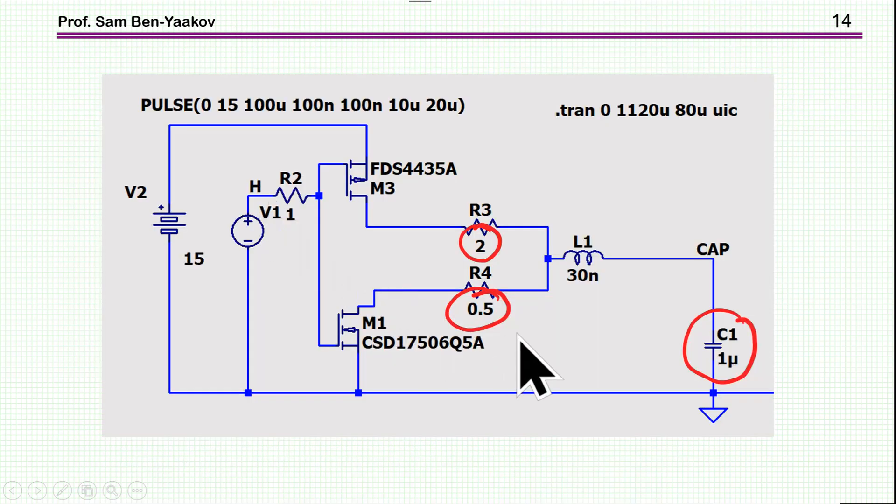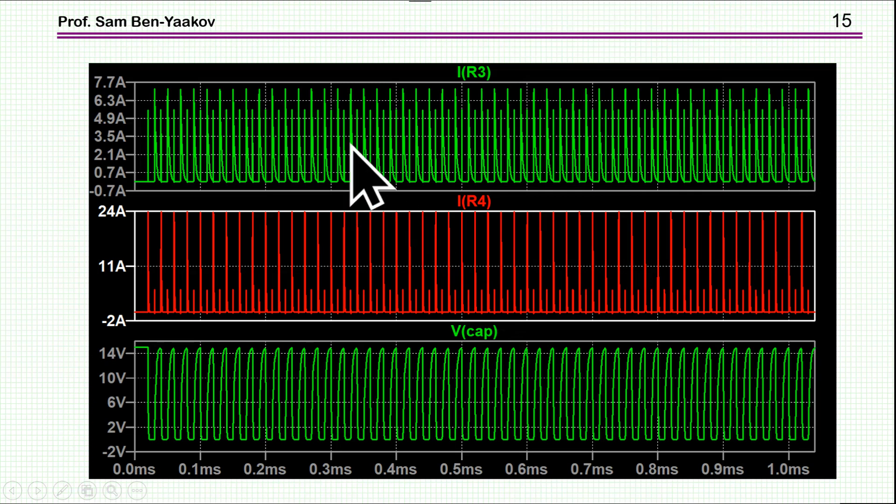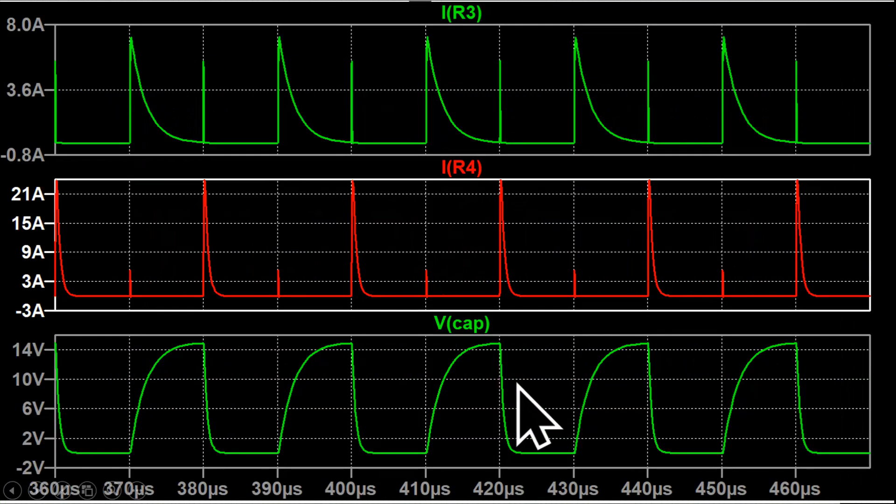Now let's have a look at another case. I have here one microfarad. It's like a very large transistor. It could be like a module of an IGBT. I've put here a 2 ohm, 0.5 ohm, and here it is again. This is one resistor, another resistor, and this is the capacitor voltage.